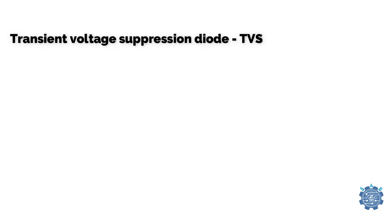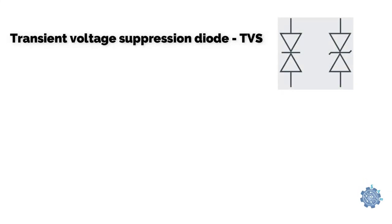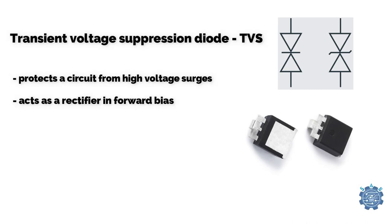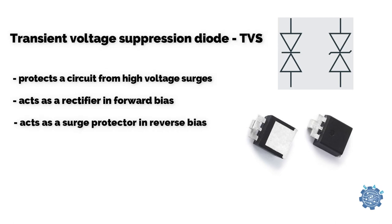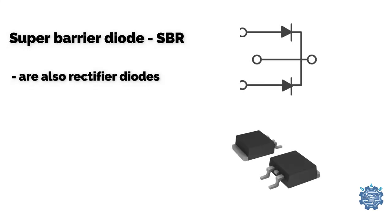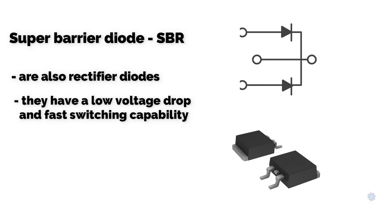Transient Voltage Suppression diode is a type of diode that protects a circuit from high voltage surges. It acts as a rectifier in forward bias and as a surge protector in reverse bias. Super barrier diodes are also rectifier diodes but like Schottky diodes they have a low voltage drop and fast switching capability.